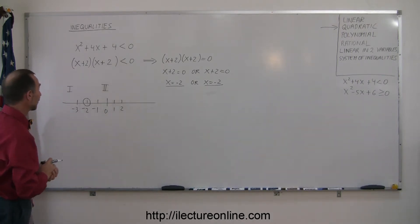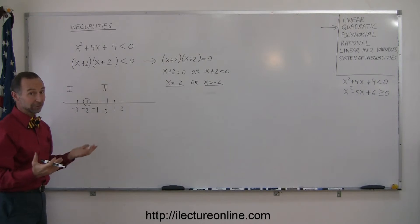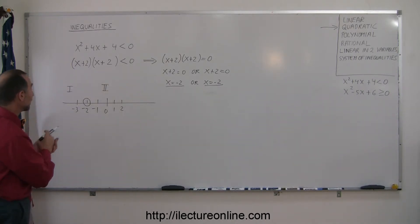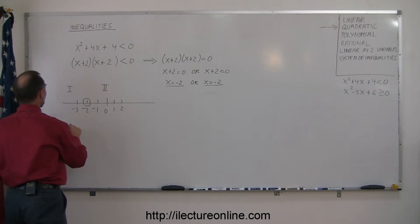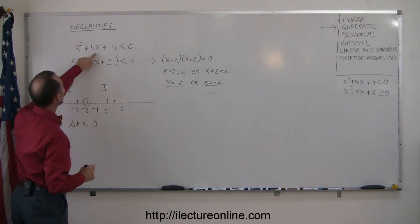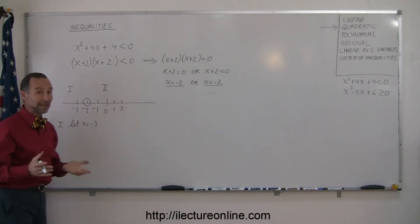So now we have to figure out which of the two regions satisfies the inequality, and to figure that out, you're going to pick a test point in each of the two regions. So for region number one, we're going to let x equal negative 3, and we're going to plug that into our inequality to see if that makes that a correct statement.